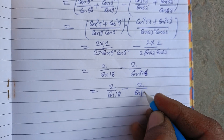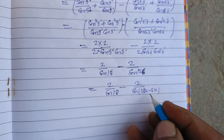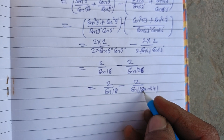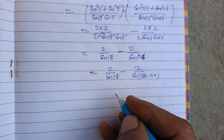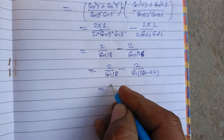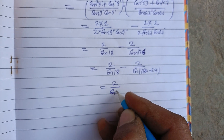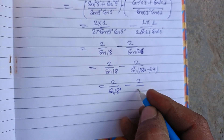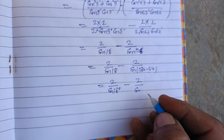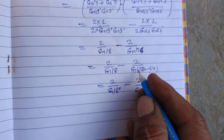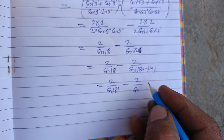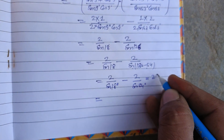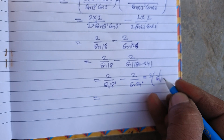Now sin126° can be written as sin(180°−54°), and since sin(180°−θ) = sinθ, this equals sin54°. So 2 is common and we write 2 times (1/sin18° minus 1/sin54°).